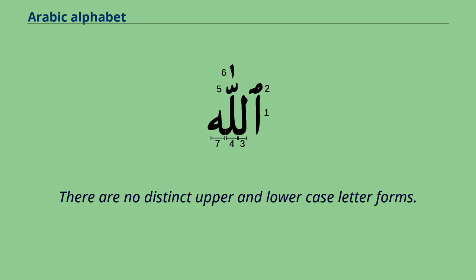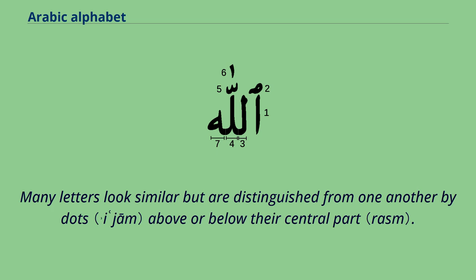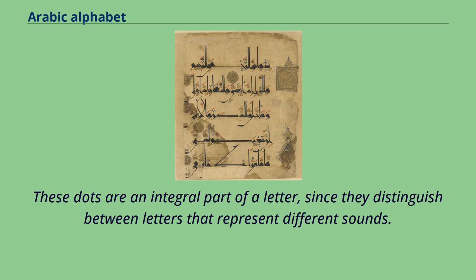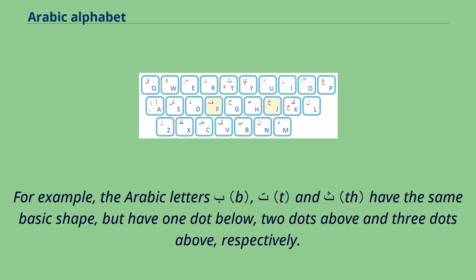There are no distinct upper and lowercase letter forms. Many letters look similar but are distinguished from one another by dots above or below their central part. These dots are an integral part of a letter, since they distinguish between letters that represent different sounds. For example, the Arabic letters Ba, Ta, and Tha have the same basic shape, but have one dot below, two dots above, and three dots above, respectively.